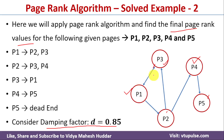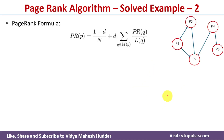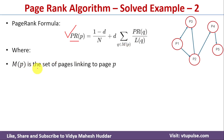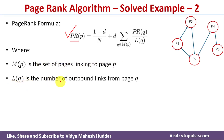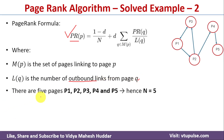Now we will apply the PageRank algorithm to this web graph. To find the page rank we use the formula: PageRank(P) = (1 - d) / N + d × Σ [PageRank(Q) / L(Q)] for Q belonging to M(P), where M(P) is the set of pages linking to page P, and L(Q) is the number of outbound links from page Q. There are 5 pages — P1, P2, P3, P4, and P5 — so N = 5, and d = 0.85.